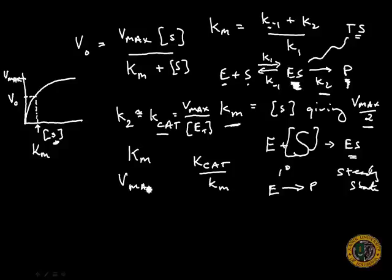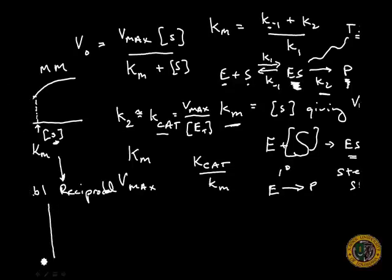Km and Vmax can be determined from plotting data like substrate concentration and initial velocity by taking what's called the double reciprocal of the Michaelis-Menten plot. When we do that, you get a line. On the x-axis, we're looking at 1 over substrate concentration. On the y-axis, we're looking at 1 over V0. The points will be aggregated here, and then by taking a linear regression, we get an equation, a line that intersects the y and the x-axis.